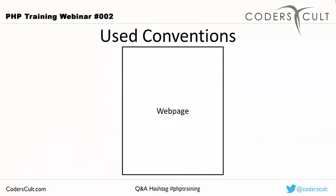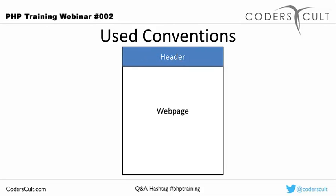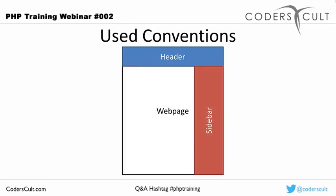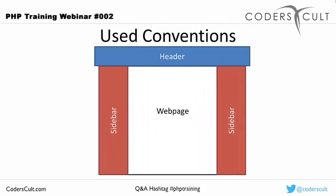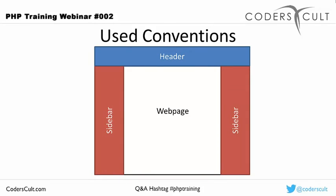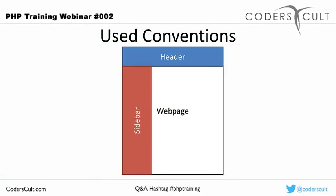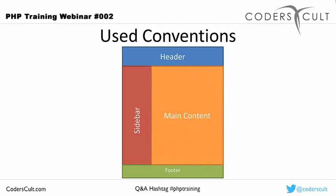Looking at a website, it's pretty similar — users like to see what they're used to seeing. On a webpage you commonly have a header section on top, a sidebar (sometimes on the left, sometimes the right, or both for a three-column layout), a footer down below, and your main content area — where the bulk of the content you're actually reading is located.